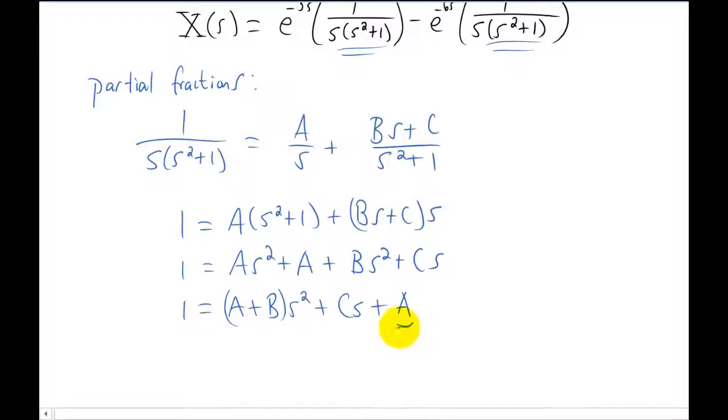So we know by comparing the left and the right hand sides that this a term is just going to be 1. The cs term has to be 0 because we have no s terms on this side of the equation. And similarly this a plus b term has to be 0. That's really quickly going to give you the answers a equals 1, b equals negative 1, and c equals 0.